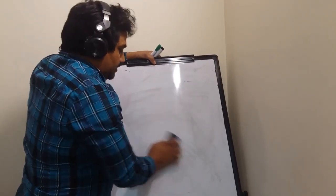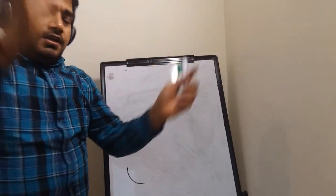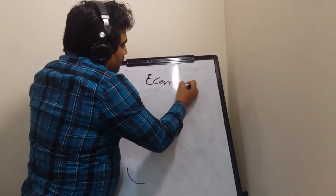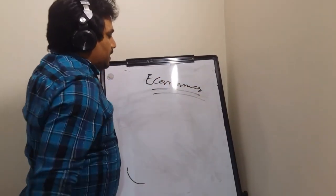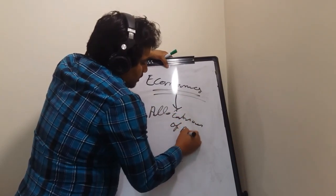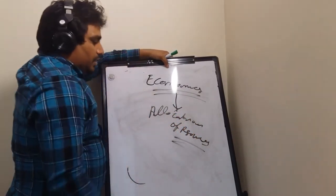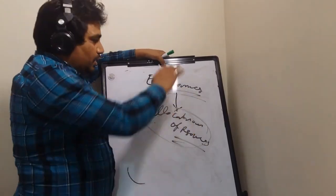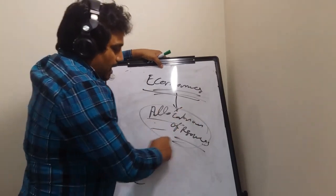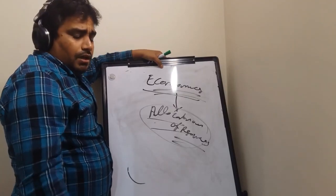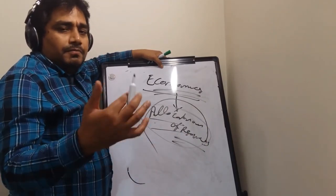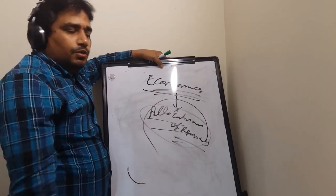This is the topic of today's Digital Notes One. After this, we will complete the next part in the next lecture. So, economics basically deals with the allocation of resources. Economics is the study of allocation of resources. Is this definition correct? Probably yes, probably no.